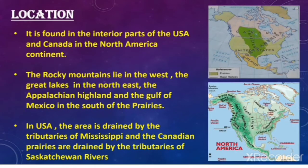Location of prairies: it is found in the interior parts of the USA and Canada in the North American continent. The Rocky Mountains lie to the west, the Great Lakes in the north east, and the Appalachian Highland and the Gulf of Mexico lie to the south of the prairies.